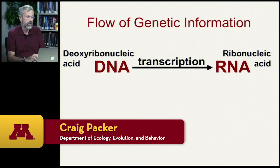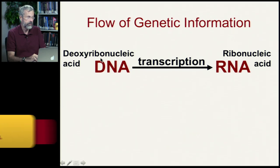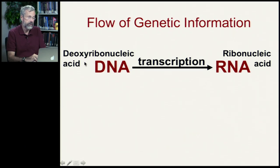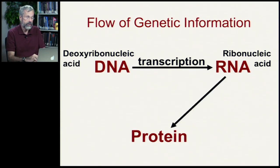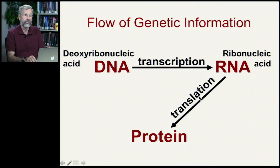Now we're ready to assemble the proteins themselves through a process called translation. The flow of genetic information starts with deoxyribonucleic acid, or DNA, and through transcription we get ribonucleic acid — in this case messenger RNA. From that, we're going to go to proteins through the process of translation.